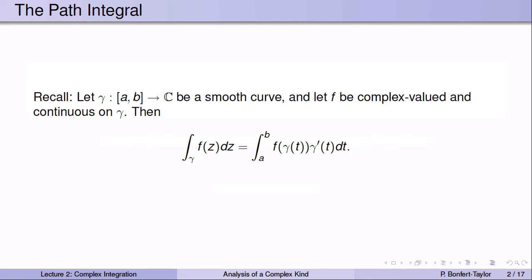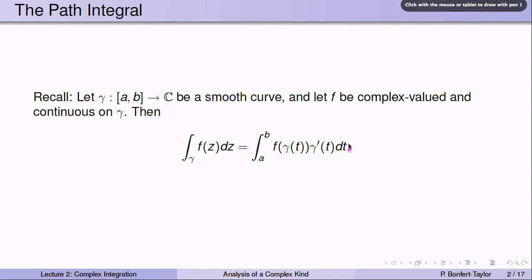Remember, this is how we define the complex path integral. Given a smooth curve gamma and a complex valued function f defined on gamma, we define the integral over gamma of f(z) dz to be the integral from a to b of f(gamma(t)) times gamma prime of t dt. This second integral can be broken up into its real and imaginary parts and then integrated according to the rules of calculus.